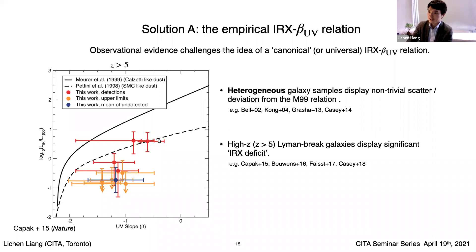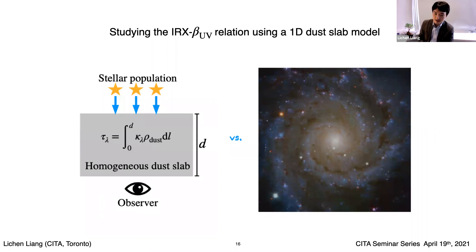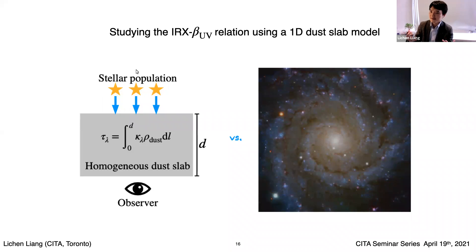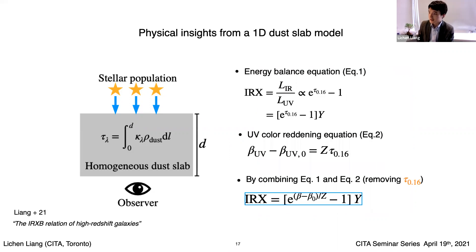Our goal is to understand this relationship better. When dealing with a physics problem, you want to boil it down to a simplified toy model that gives you insight. I did the same thing: what if a complex galaxy is as simple as a 1D dust slab? Imagine a fixed stellar population with a homogeneous dust slab between the stars and the observer. I derive the analytic solution and show how it depends on different galaxy stellar and dust properties. There are essentially two main equations: one is energy balance — giving the relationship between IRX and the optical depth tau following an exponential law — and the second is the color-reddening equation.